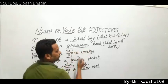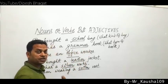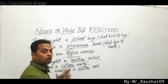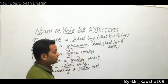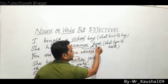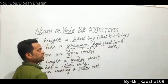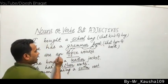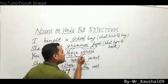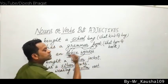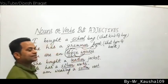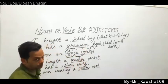Similarly: 'She has a grammar book.' Grammar is normally a noun, but in 'grammar book,' it describes what kind of book — so grammar is an adjective here. 'You are an office worker' — office describes what kind of worker, so 'office' is an adjective. When two nouns come together and the first describes the second, the first noun acts as an adjective.